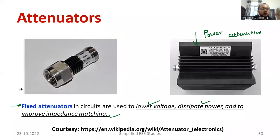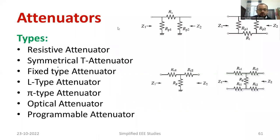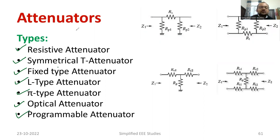In the coming slides, I am going to show the varieties of attenuator topologies. If you know the basics of two-port networks, that will be really useful. Attenuators are divided into resistive type, symmetrical T attenuator, fixed type, L type, pi type, optical type, and programmable type. Usually, resistive type attenuators are the most commonly used.